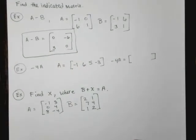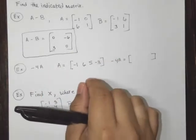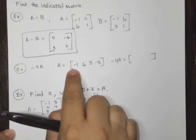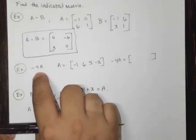Now let's take a look at the second example. It says find negative four A. All right. So all we're going to do, this is just scalar multiplication. We're going to take each of these cells, and we are going to multiply them by negative four.